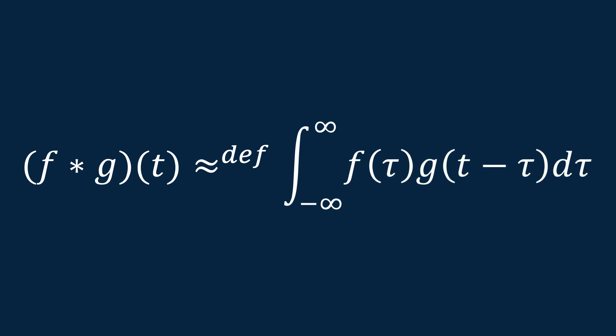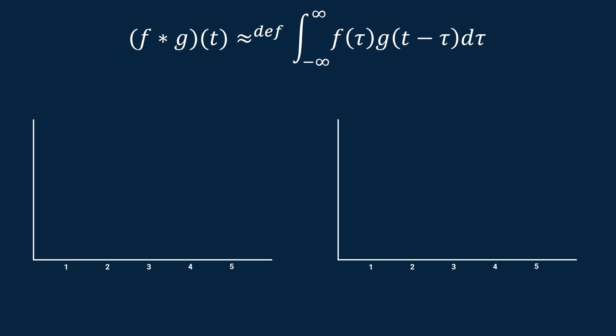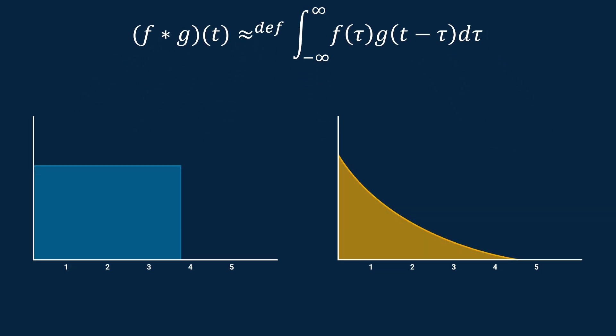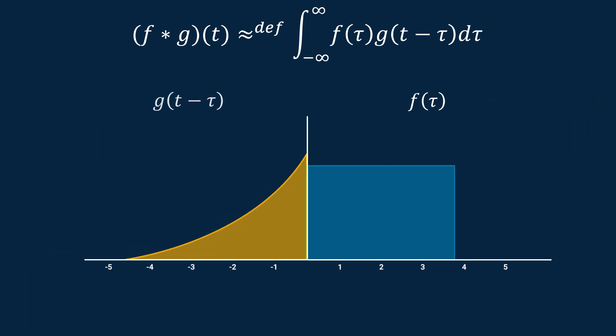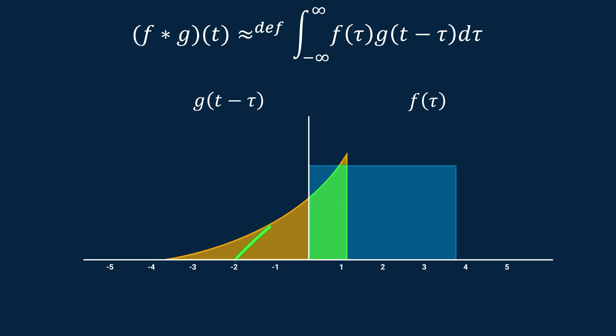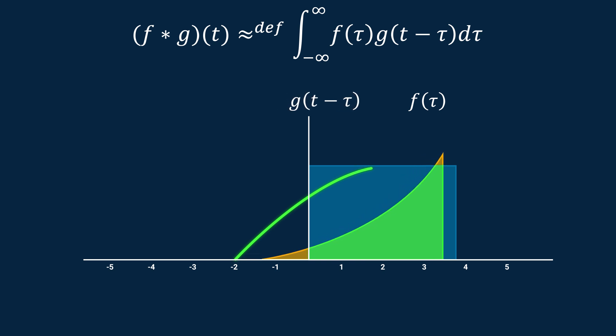Still confused? Visually, it looks like this. We start with two functions, f and g. To convolve them, g is flipped in time, and then we sweep it across the entirety of f. For each moment in time, as g is swept across f, we multiply the two functions together, and then sum the result. Essentially, we're scaling one function by the other, that's the multiplication, and then returning the area under the curve, that's the integral.